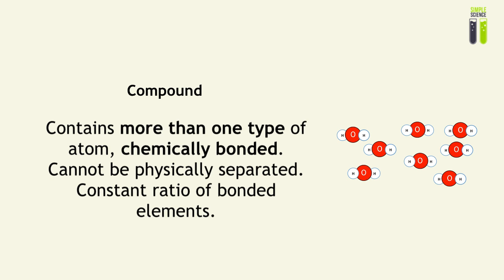And the key thing to note is that there is a constant ratio of bonded elements within the structure. That means for every water molecule, there are two hydrogen atoms and one oxygen atom. So basically, there is a strict and constant ratio of bonded elements.